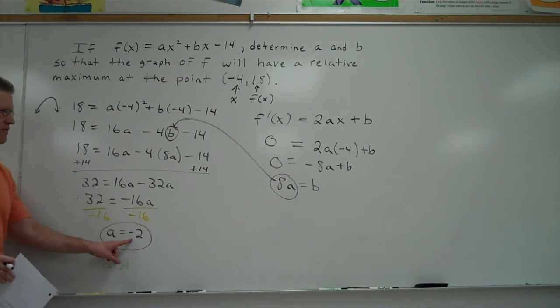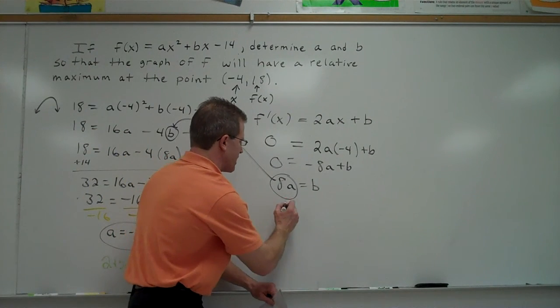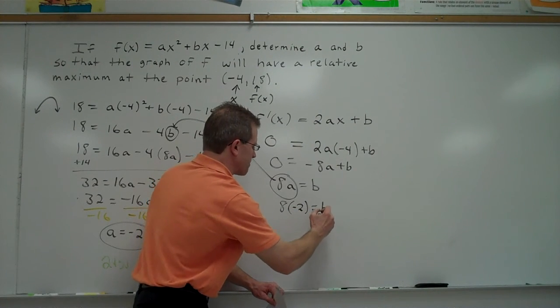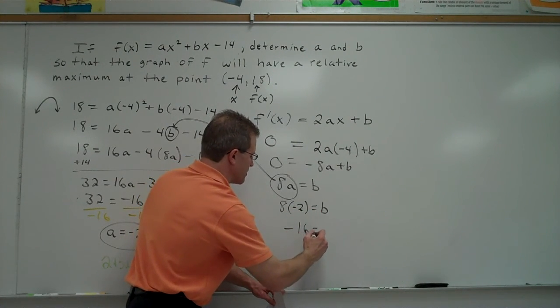Okay. Once I have a, how do I find b? Plug negative 2 in for a right here now. So 8 times negative 2 equals b. So negative 16 is your b value.